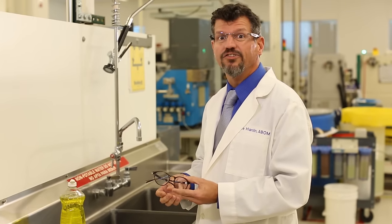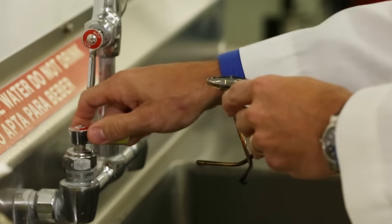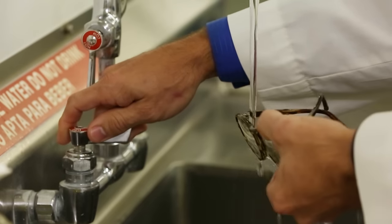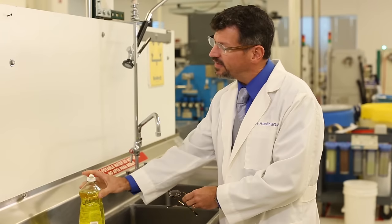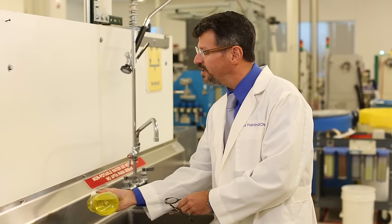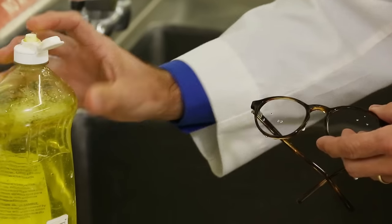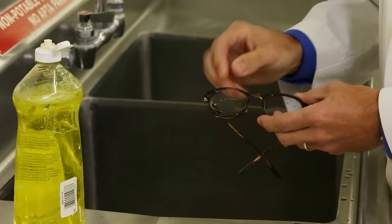First thing you want to do is run your glasses under some warm water. Then you want to take some dish soap. Preferably you want dish soap that doesn't have any skin softeners in there because that can leave a residue on your lenses.